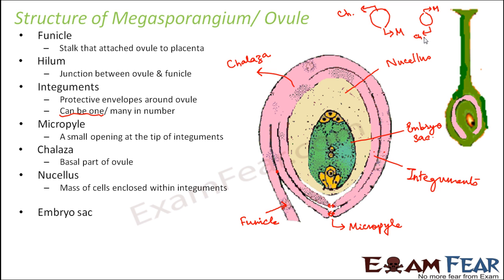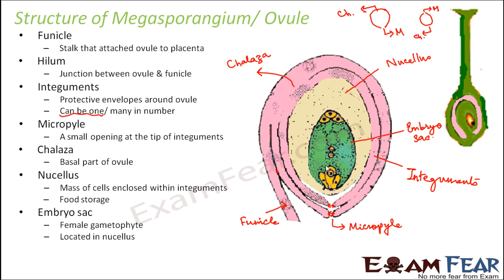The nucellus is the mass of cells enclosed within the integuments. These cells are useful for food storage — they store food required after fertilization. When fertilization takes place inside the embryo sac, a zygote will be formed, and it will need energy and food for all its activities. This food will be provided by the cells of the nucellus. The embryo sac is the female gametophyte, located inside the nucellus.